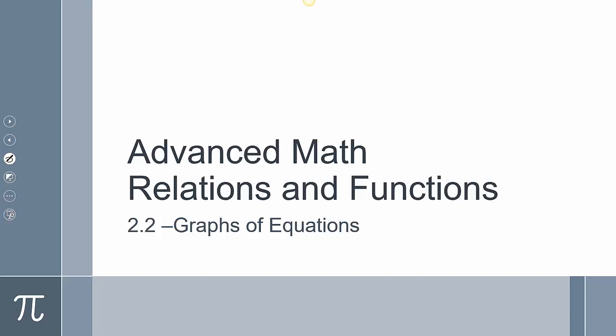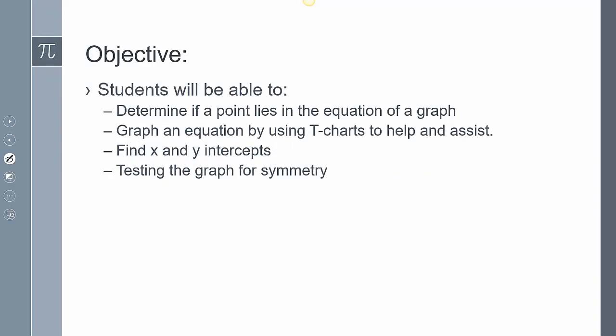Today is going to be 2-2: graphs of equations. We're going to continue our idea of relations. Today we're going to determine if a point lies on the equation of a graph, graph an equation by using t-charts to help and assist us — always a way to fall back to see how we graph points — find the x and y intercepts, and then test the graph for symmetry.